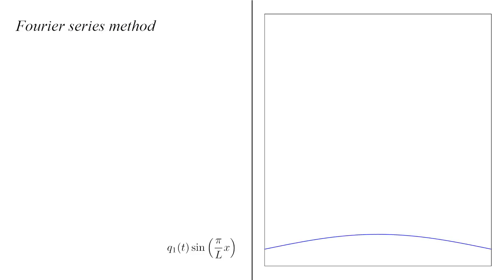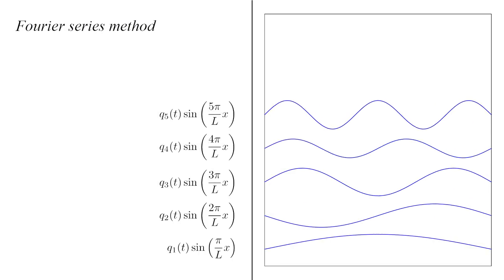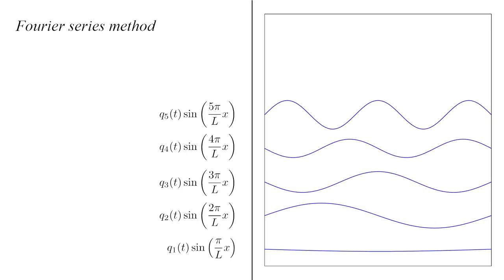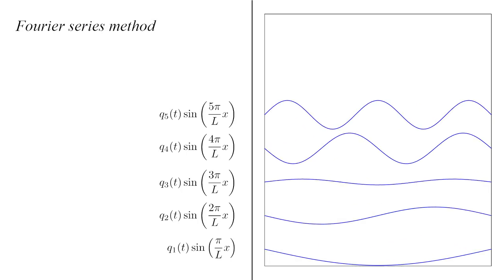The first mode, with a single bump, oscillates at a low frequency. The second mode, with two bumps, oscillates at twice that frequency. And the kth mode, with k bumps, oscillates at k times the first mode frequency.